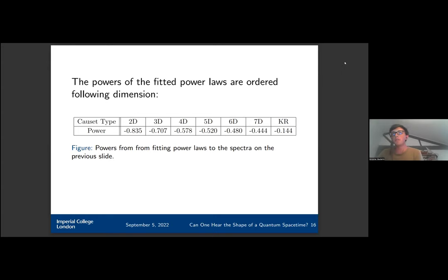If we now fit those power laws, we see that the powers of the power laws actually order themselves in terms of dimension. Here I have the powers and the dimensions, and you can see 2D, 3D, 4D, 5D, 6D, and 7D are all ordered. So it seems that the power law actually allows us to determine the dimension of the causal set.